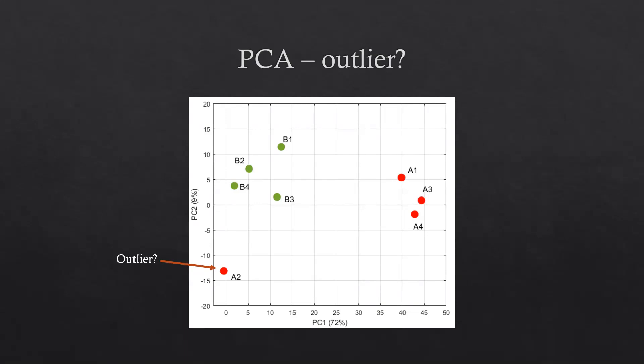Except the other sample, A2. A2 looks far away from both group A and B. It reminds us of an outlier, probably, but we are not sure.